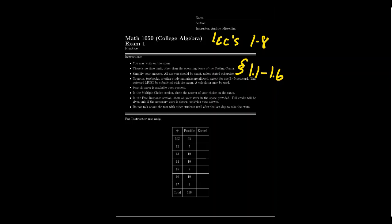This exam consists of two types of questions. The first is multiple choice — you'll be given a question with four, five, six, or more options, and you select the one single correct option. There are 11 multiple choice questions, worth 5 points each out of 100. There is no partial credit on multiple choice — you either select the correct answer for the full 5 points, or you don't get the points. It's all or nothing.